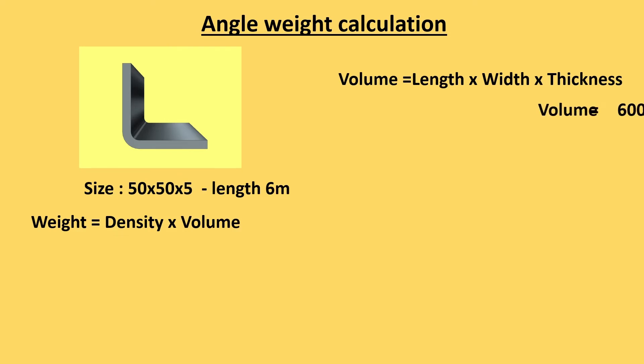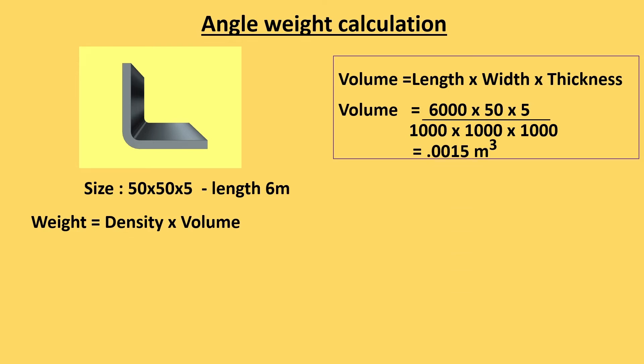First we calculate vertical rectangle having volume 6000 into 50 into 5 and we will convert it into meters. All each figure divided by 1000 and we will get the volume of vertical rectangle which is 0.0015 meter cube.